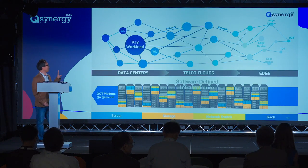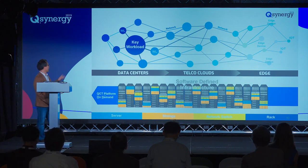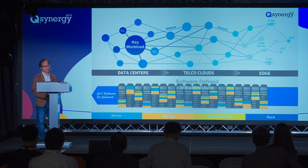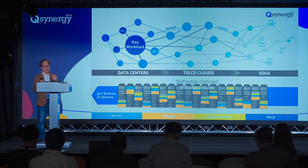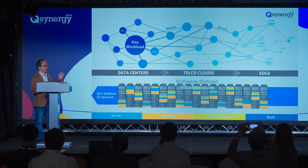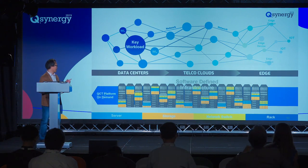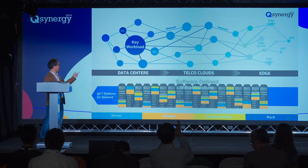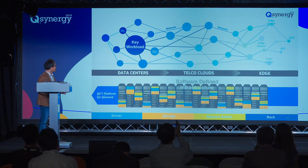In the cloud infrastructure, there are many workloads running here and there — from the data center, in the backbone network, or even on the edge. Some workloads are key workloads that deliver services to the end customers and end users. Some workloads are a bit more minor, but they also bring operational value to the data center and help improve the efficiency of the data center hardware — for example, virtualization technology and software-defined infrastructure.